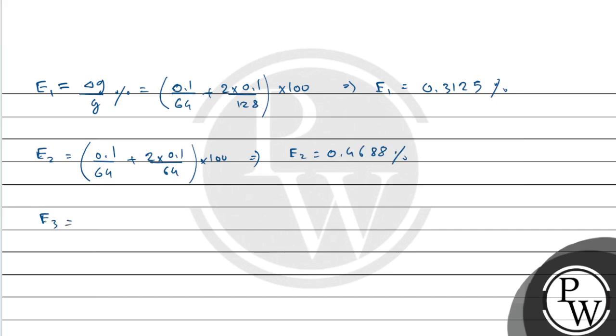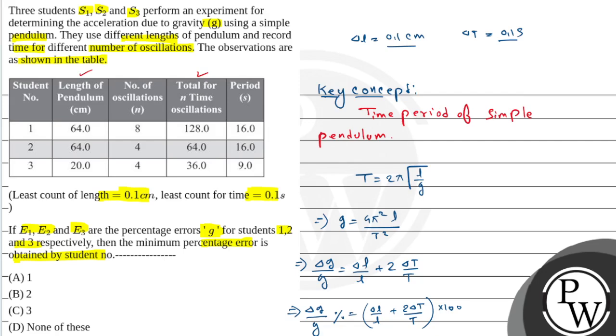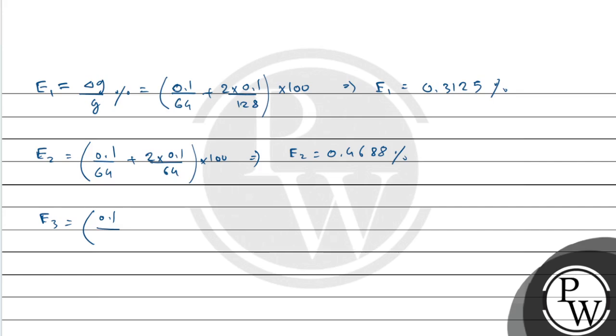Now E3 will be 0.1 by... In this case length was 20 and time was 36. Length is 20 plus 2 into 0.1 divided by 36 into 100. E3's value is 1.056 percent.